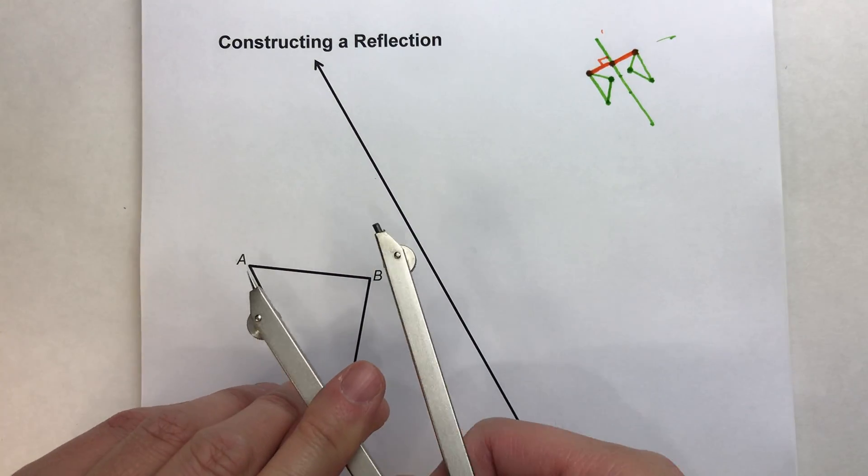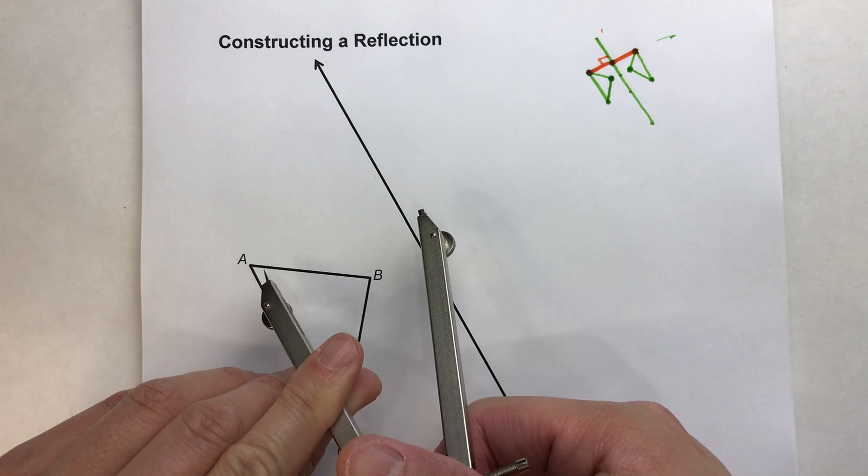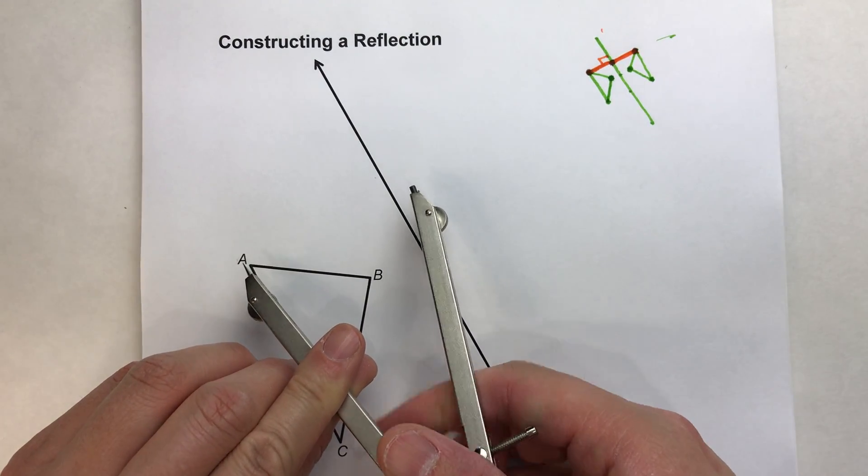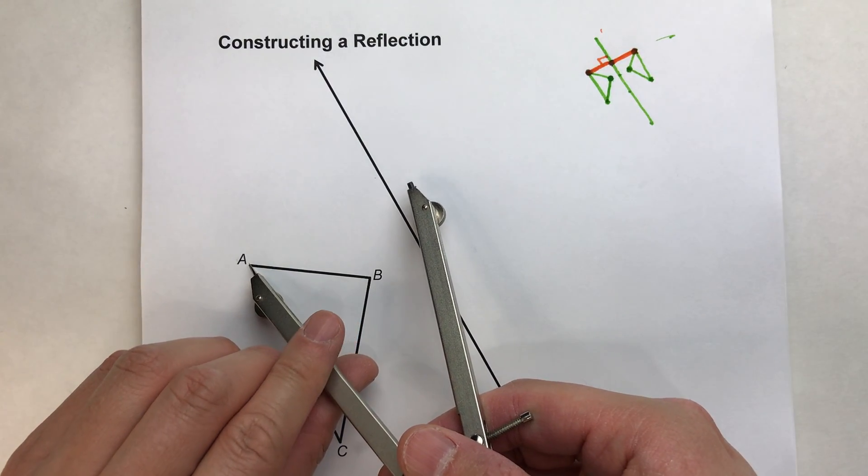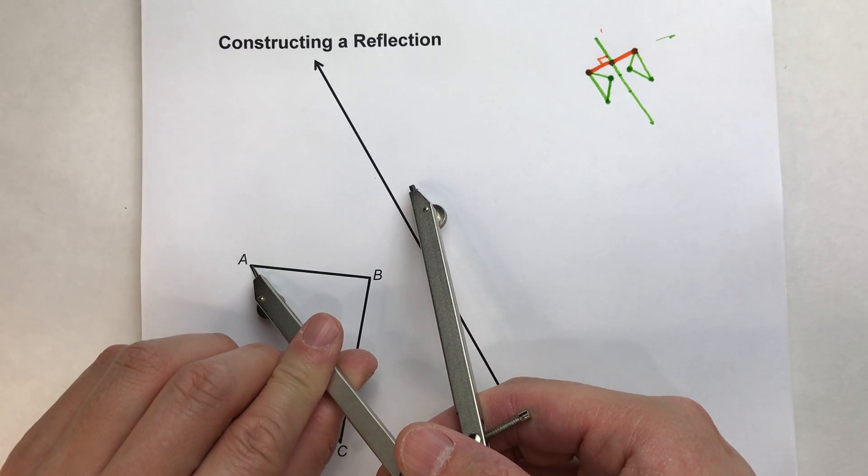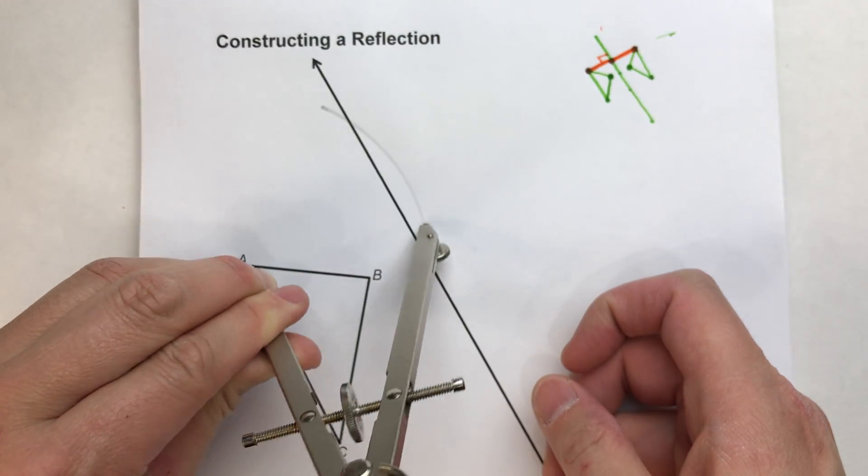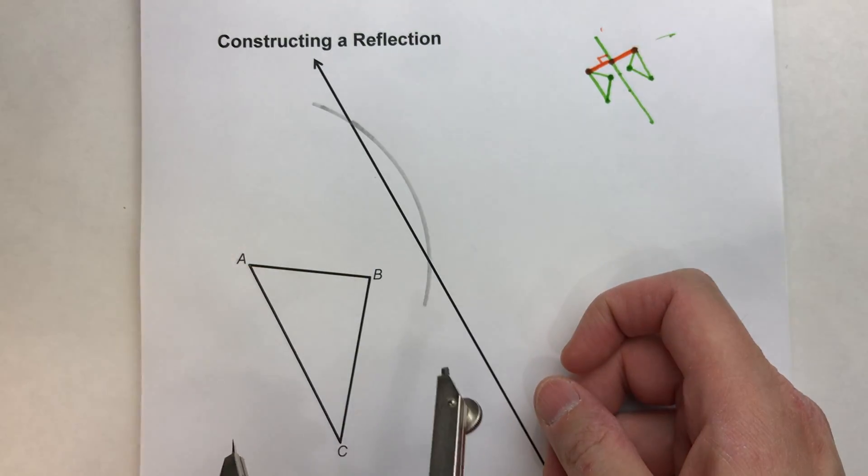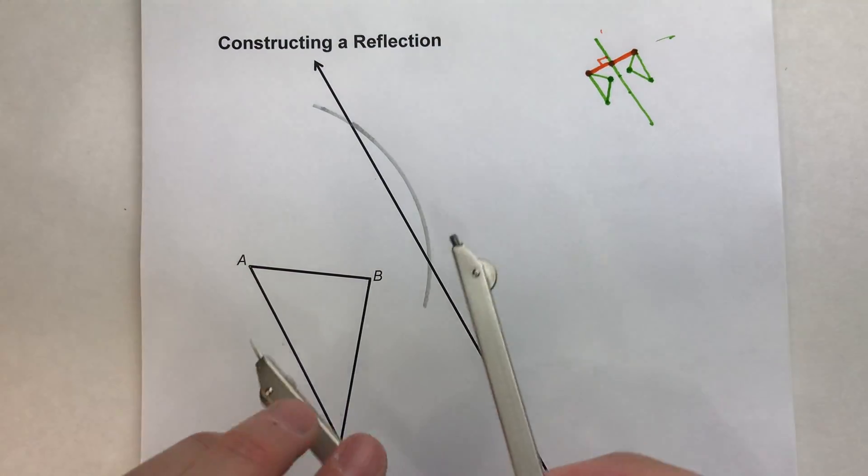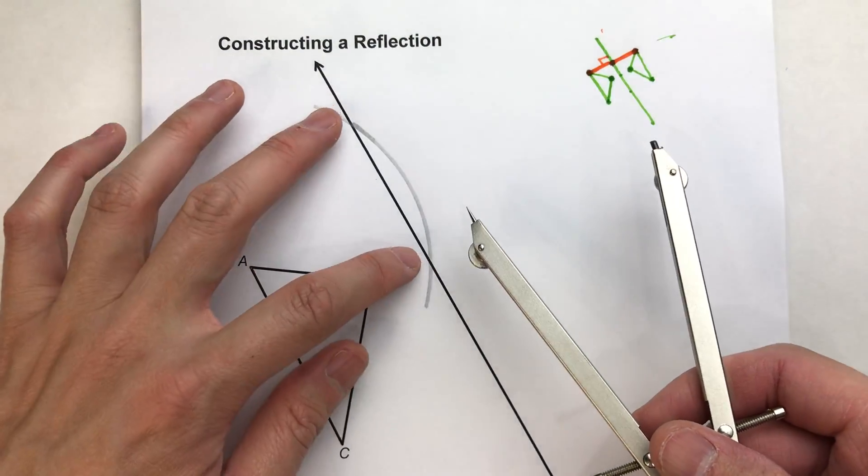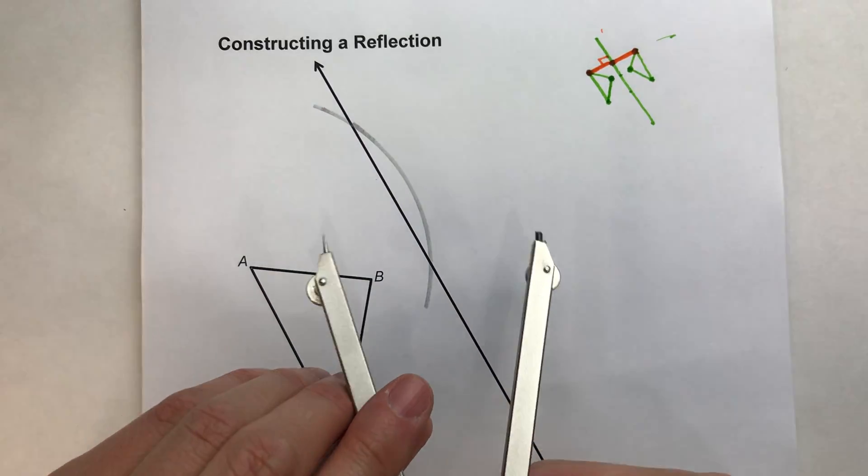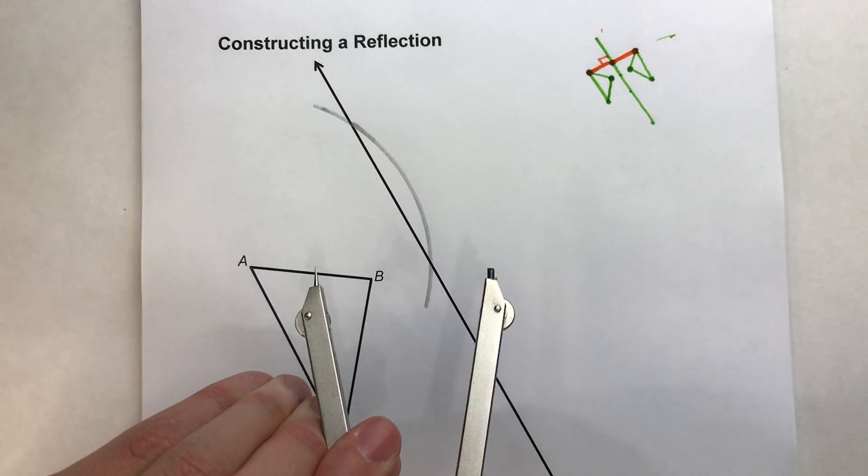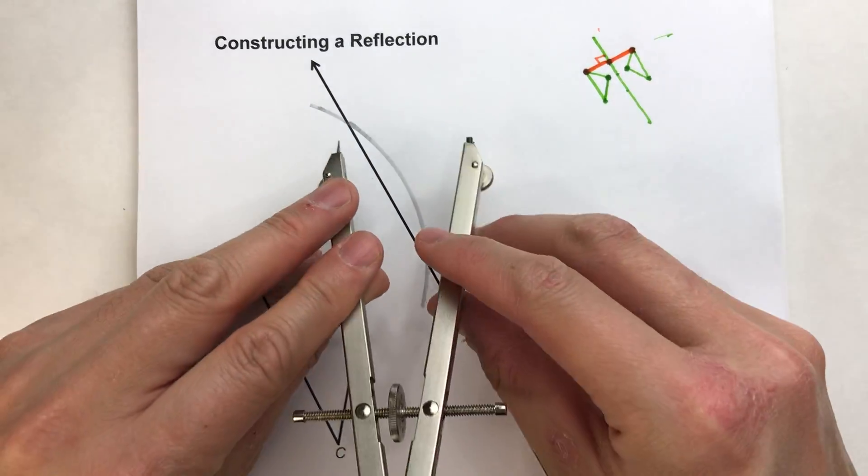So from point A, I'm going to take my compass setting and make sure it's big enough to hit that line of reflection. And off of point A, I'm going to swing an arc and hit the line of reflection two places. Now I can use any compass setting from where the arc hits the line in two places. I'm going to swing this down a little so it's not so huge.